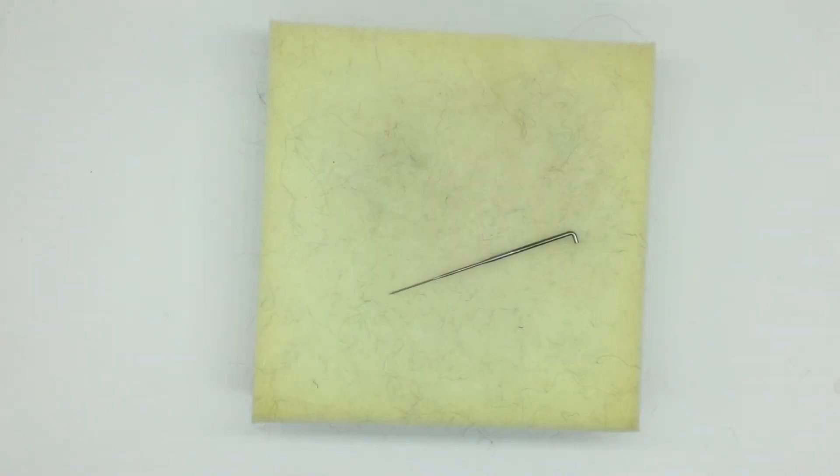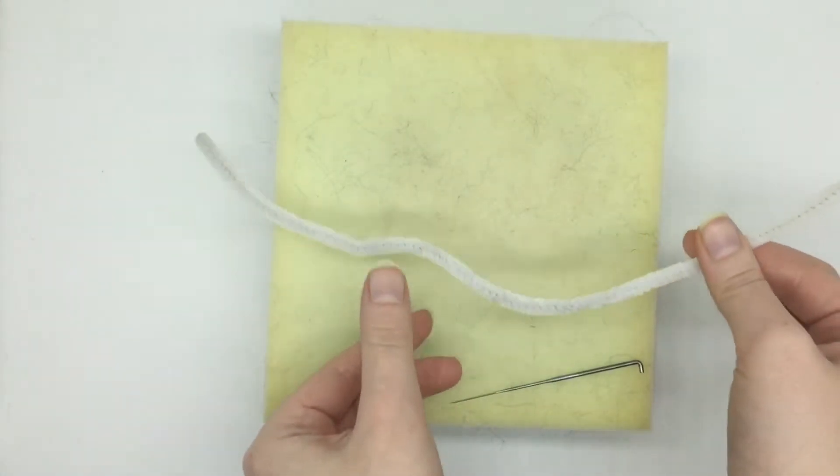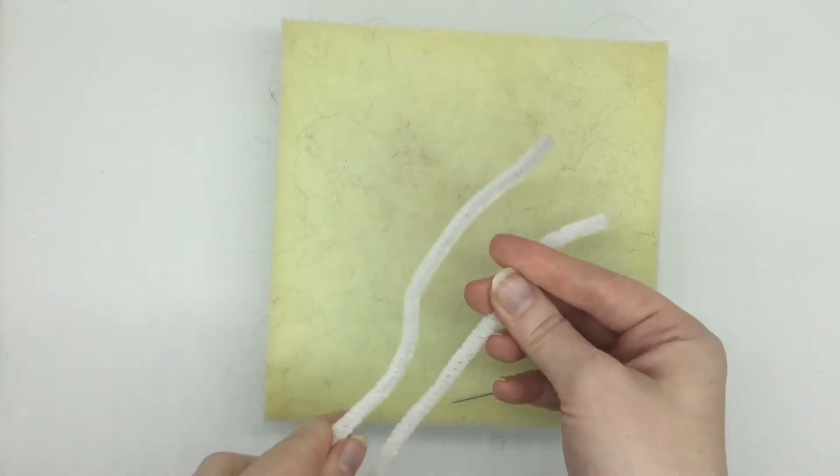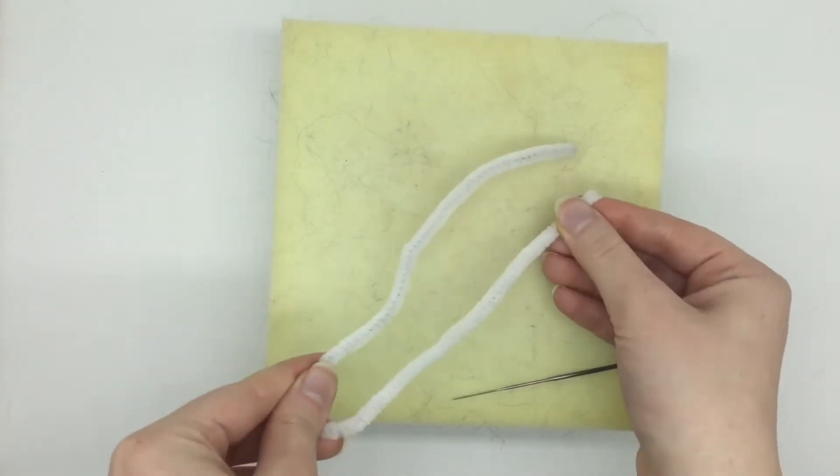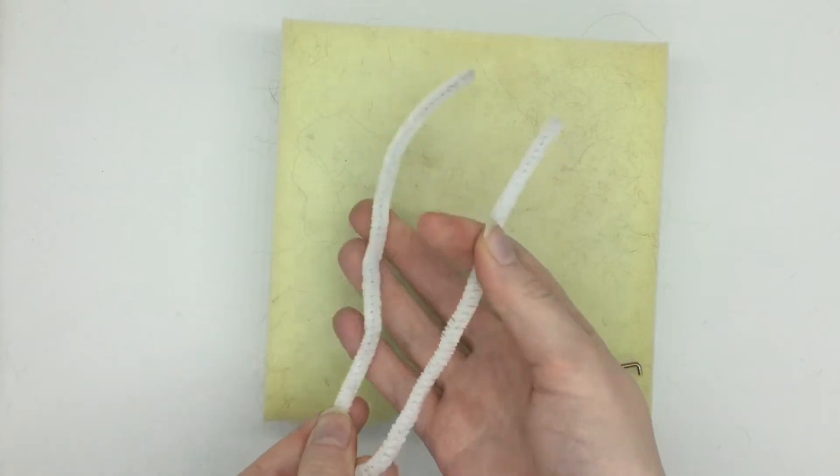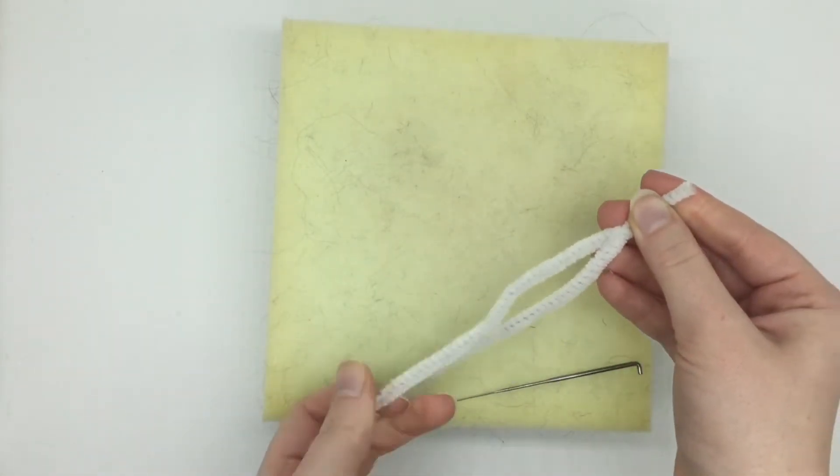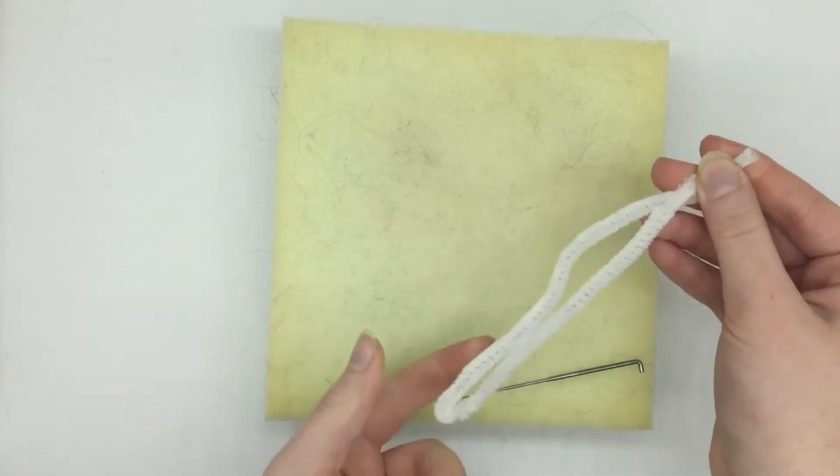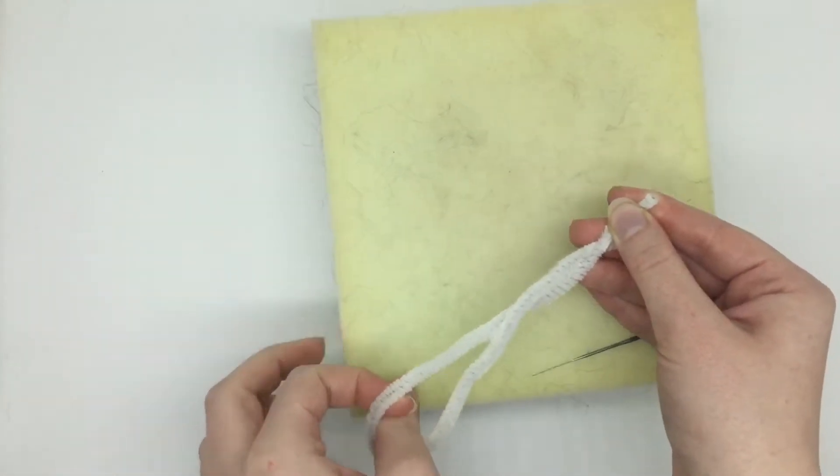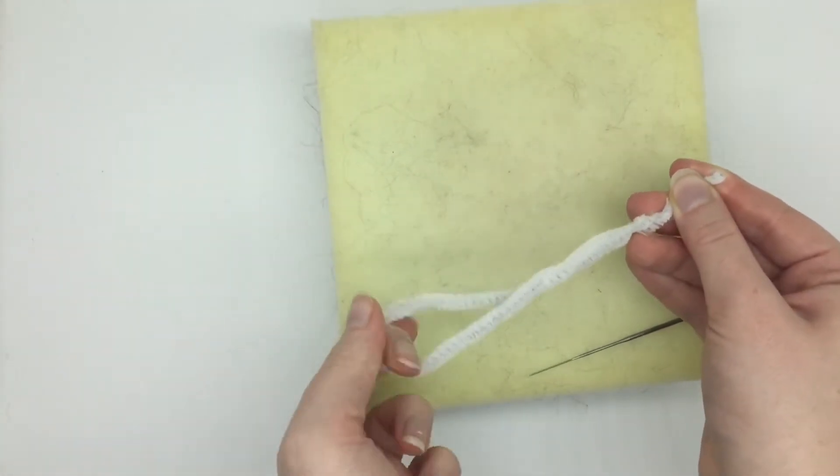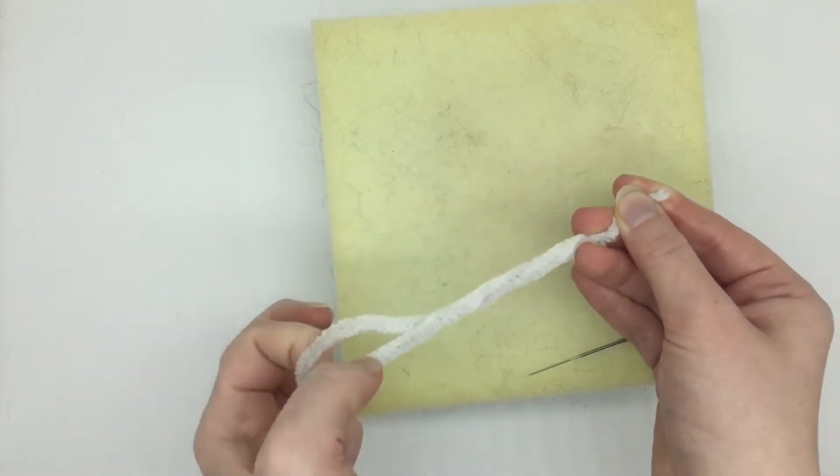To start off, you're going to get your pipe cleaner and fold it in half, and then we want to twist the pipe cleaner but we want to leave a loop at the top. It's probably easier if you just watch this next bit as it will make a bit more sense.